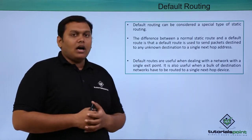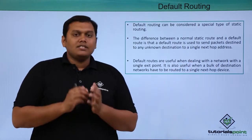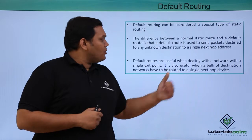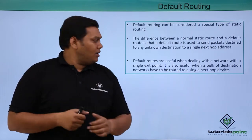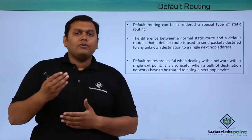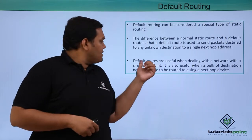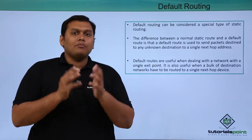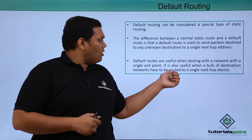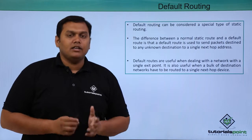Default routes are useful when dealing with a network with a single exit point, and also when a bulk of destinations are available and they have to be routed to a single next hop device. It is used only for a single exit point, and when multiple destinations are available, it will route the packets to a single next hop device.